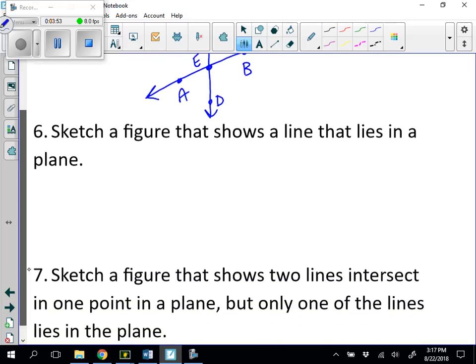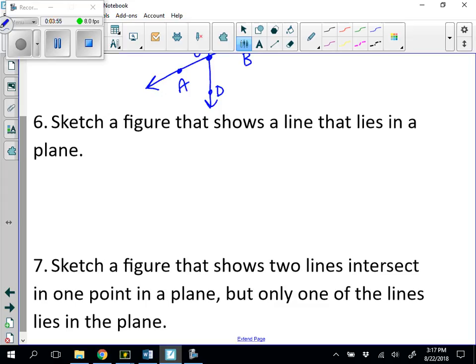Number six says sketch a figure that shows a line that lies in the plane. So I'm going to start with my plane. And if my line is in my plane, it just needs to sit in my plane like this. So this time I'm going to name my line with the letter by the arrowhead. So I'm just going to put a little M right there and call it out line M.